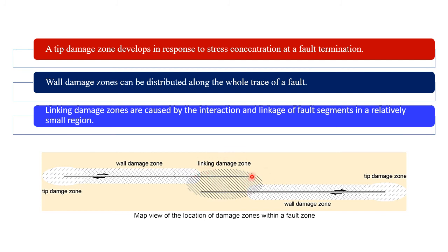Linkage damage zones are complicated due to cumulative displacement and interaction of tip and wall damage zones of two neighboring faults, consequently developing a wide range of fracture patterns depending on the interaction between two fault segments.